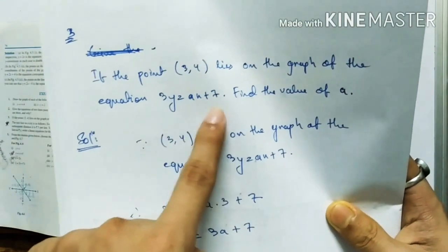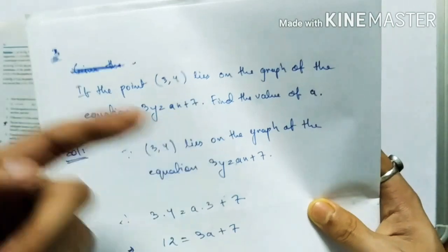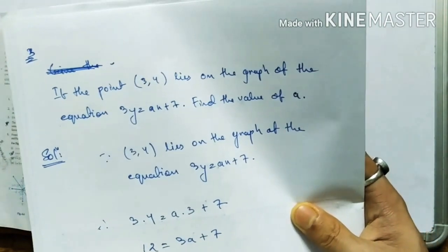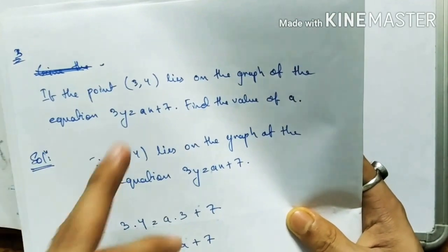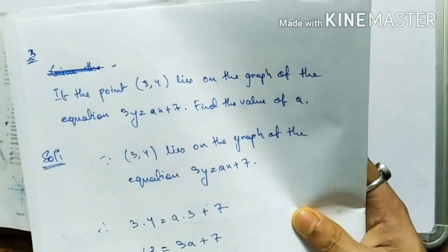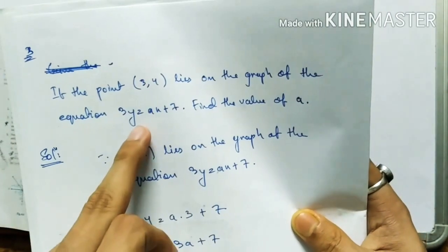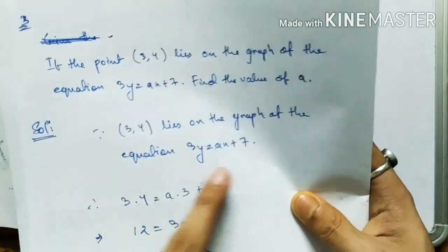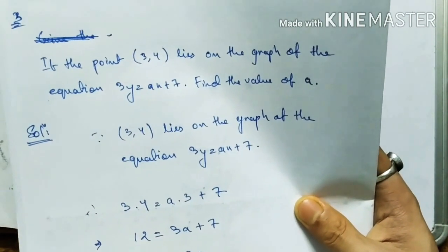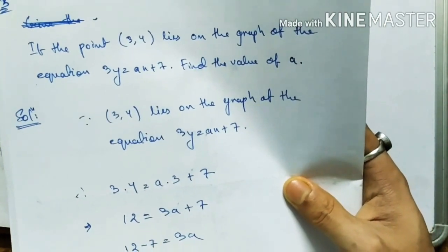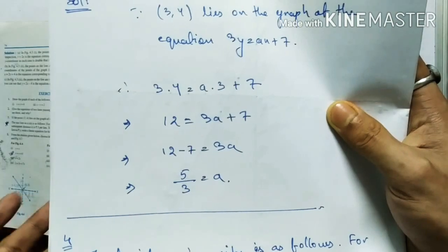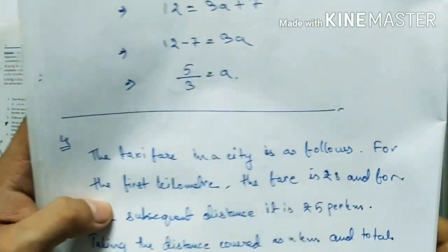Question Number 3: if a point lies on the graph of an equation, find the value of a. If the point lies on the graph, it means the point is a solution of the equation. So substitute the x and y values into the equation. Since (3, 4) lies on 3y equals ax plus 7, substitute: 3 times 4 equals a times 3 plus 7. Solve this equation to find the value of a.